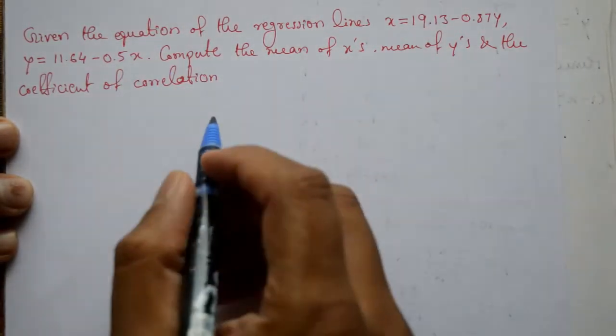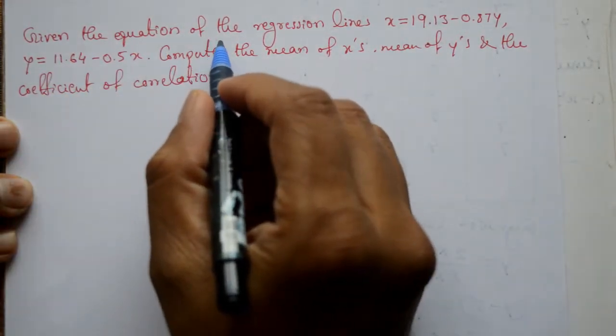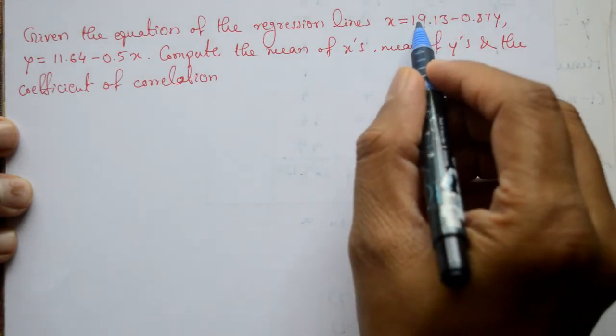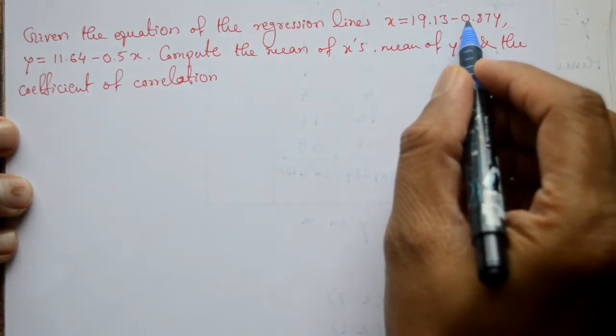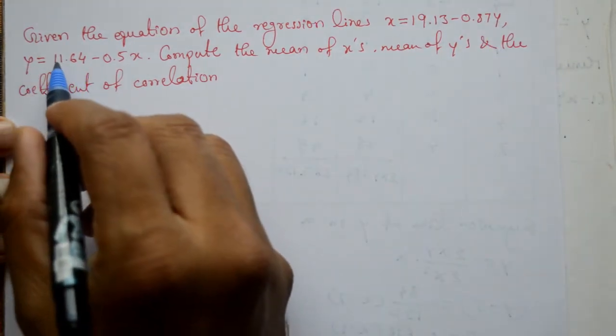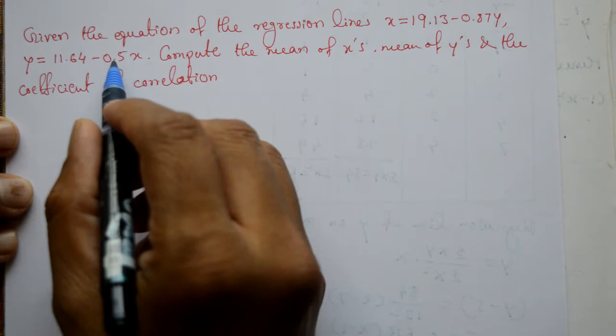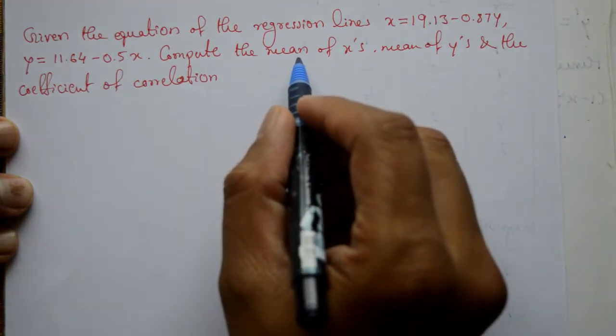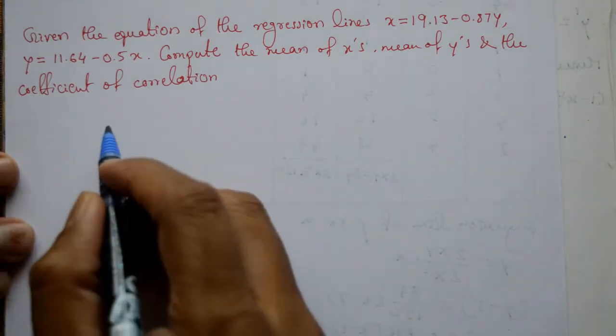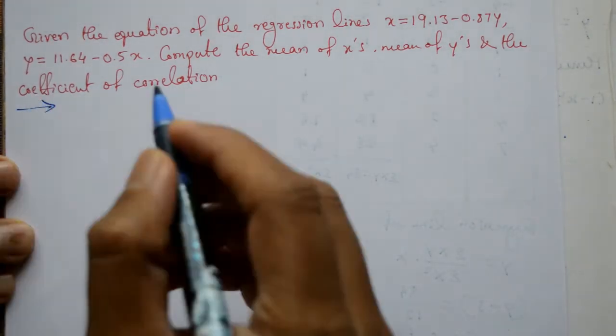Welcome friends, this problem we will solve. Given the equation of the regression lines x is equal to 19.13 minus 0.87 into y and y equal to 11.64 minus 0.5 into x. Compute the mean of x and mean of y and the coefficient of correlation. It is a very simple example.